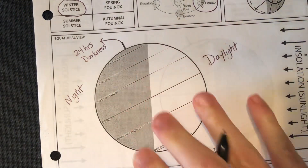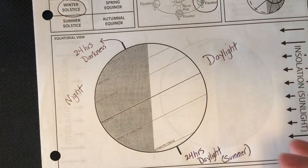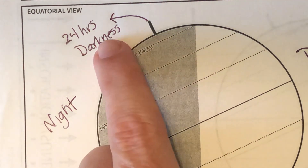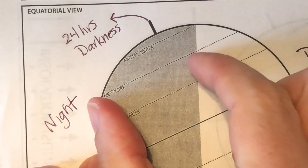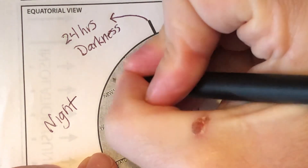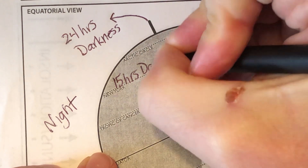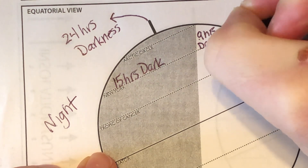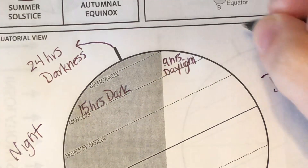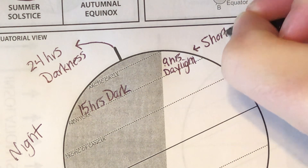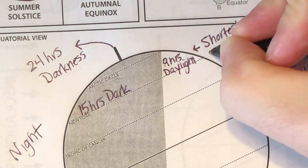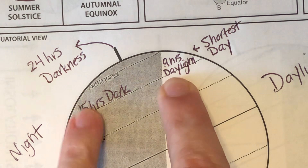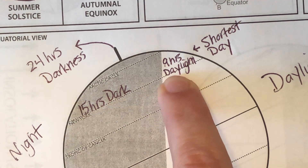Let's go down some of these latitudes. Not all of them you really need to know for these respective seasons, but New York is one you'll want to have a handle on. We have 24 hours of darkness at the North Pole and the Arctic Circle. New York — look at most of that latitude — it's in darkness: that's 15 hours of darkness and 9 hours of daylight. We call this the shortest day of the year in New York State. It's still 24 hours total — we just have the shortest amount of daylight hours, so 15 plus 9 is still 24.